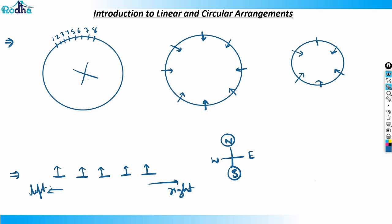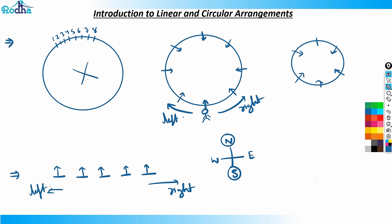In circular arrangements when all are facing center, get the directions clear — many people in exam situations tend to get directions wrong. If you are sitting facing center, just as you are sitting facing the screen right now, this is your right and this is your left. So whenever we move clockwise, that is actually the left of that person, and anti-clockwise is their right, when all are facing center.